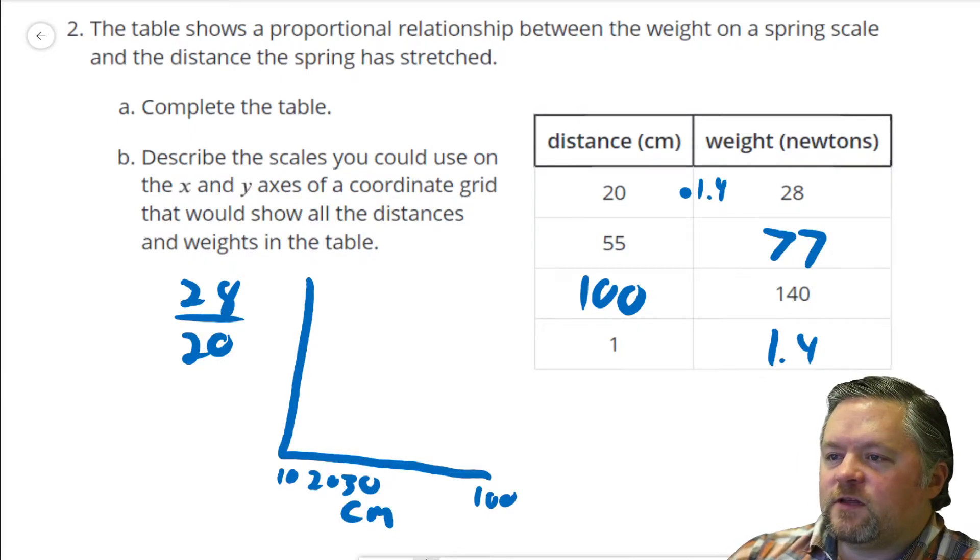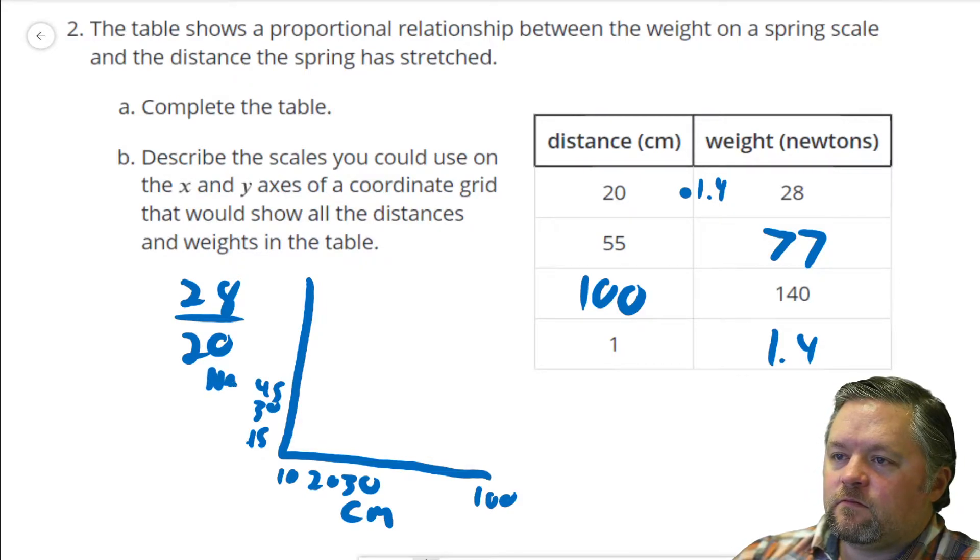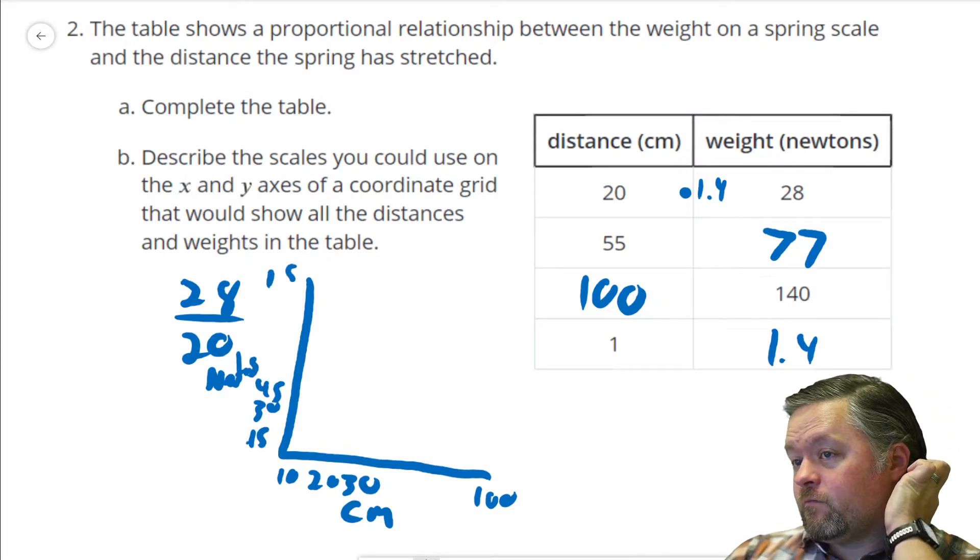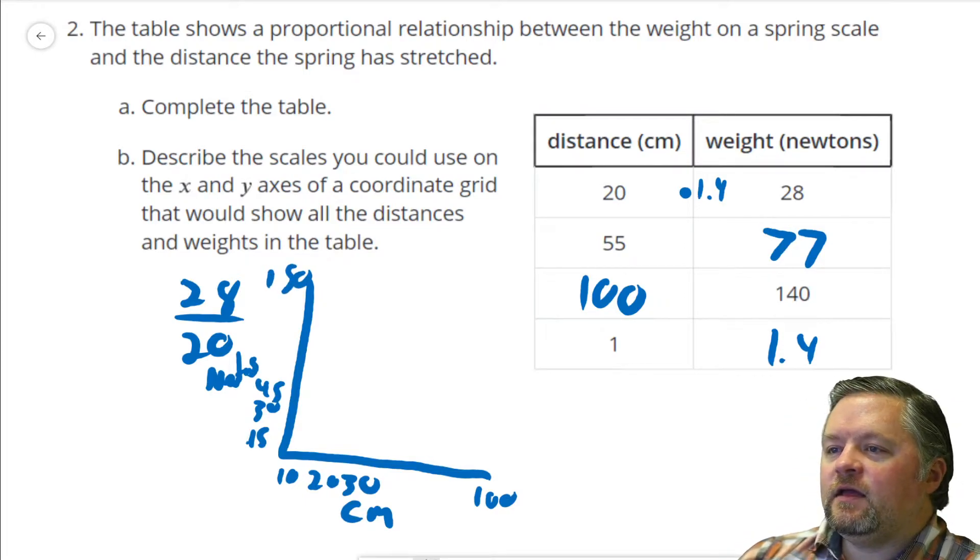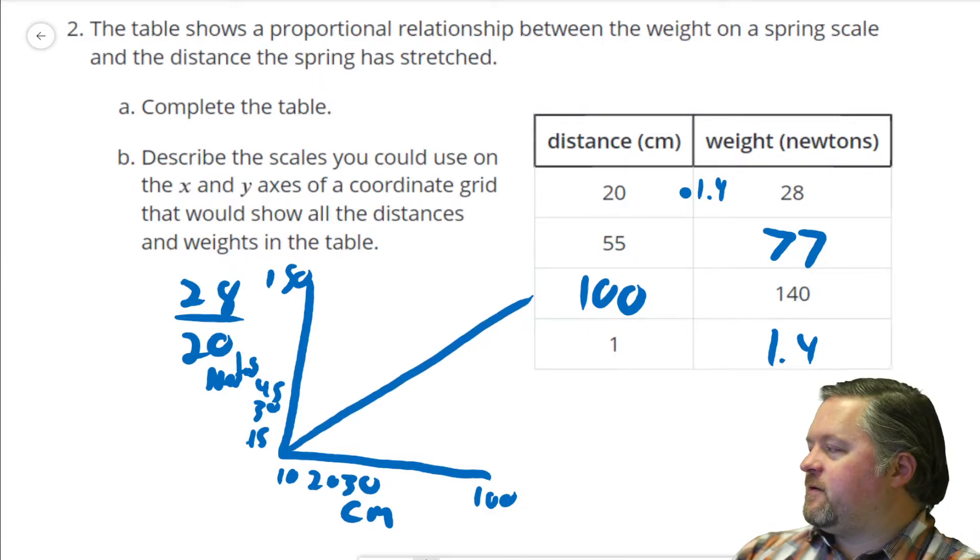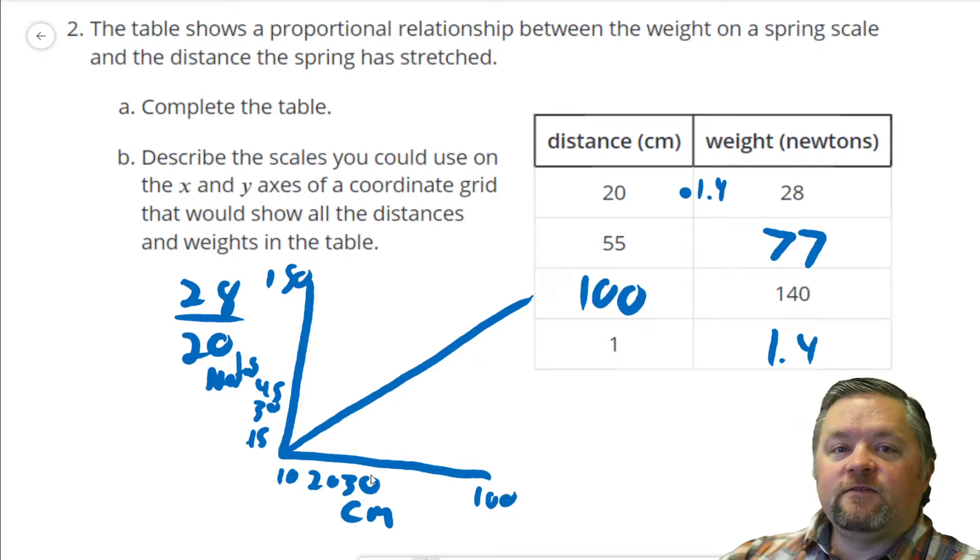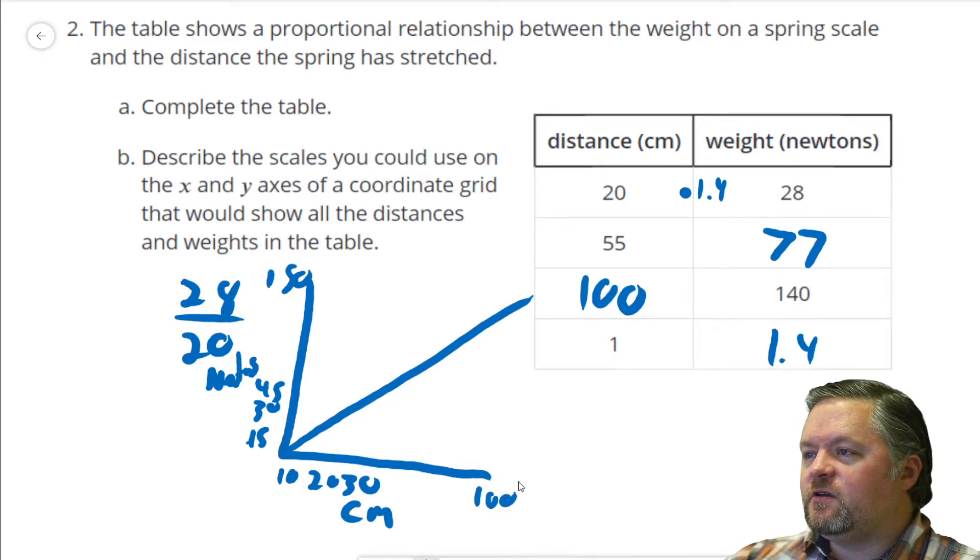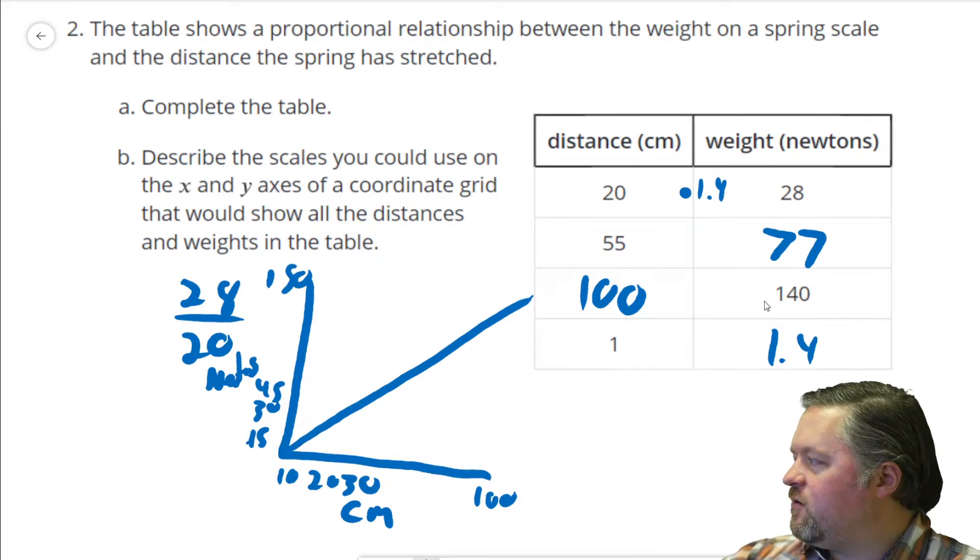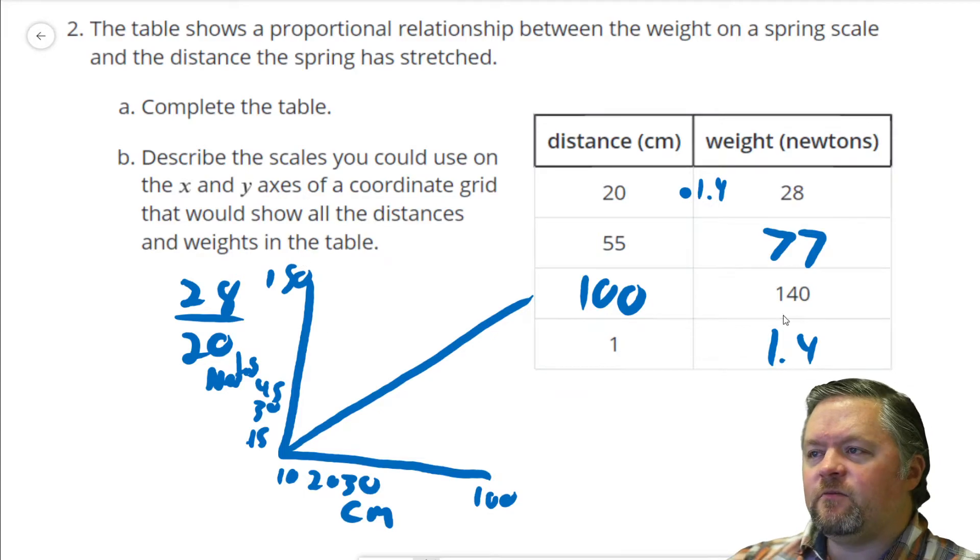We have to get up to 140 this way, so let's count by 15s and go 15, 30, 45, 10 of those would get us up to 150. And then our graph would probably look something about like that. So, when we're graphing, if we want to make sure we're going to get up there, we need to figure out how far we have to go. If we have to go up to 100, maybe count by 10s. If we have to go to 140, count by 15s.